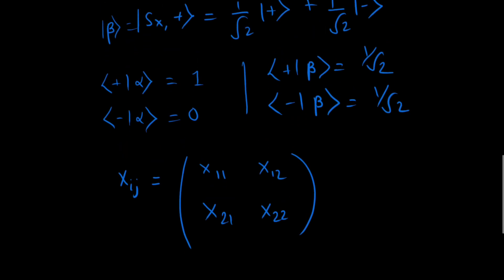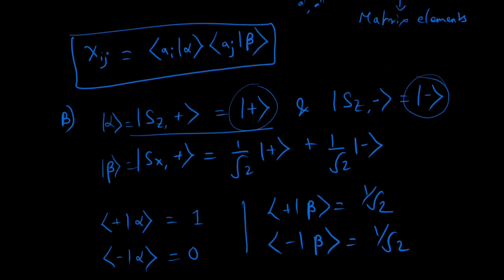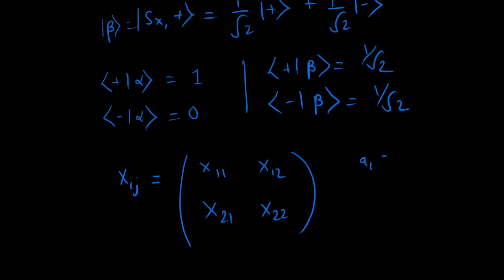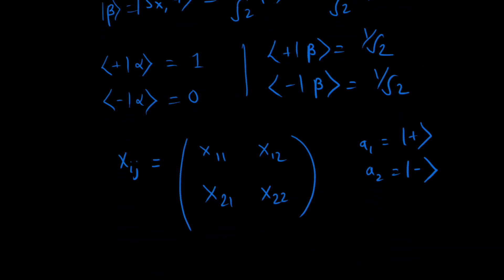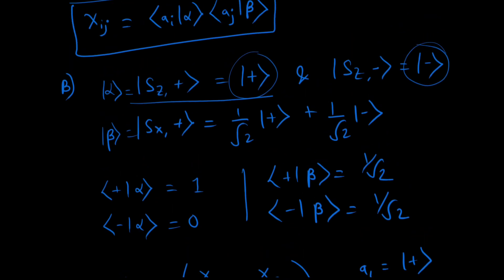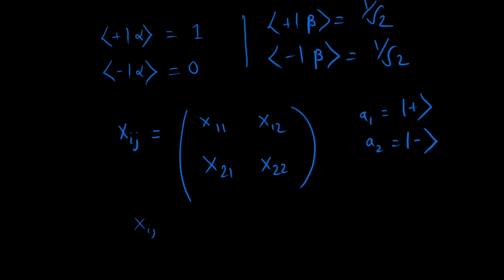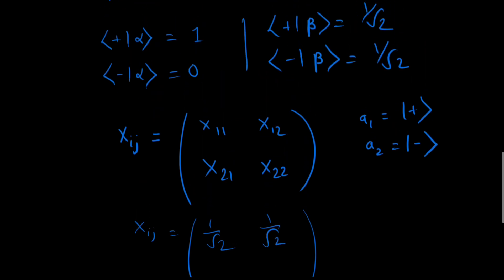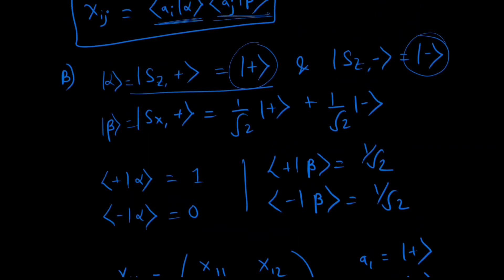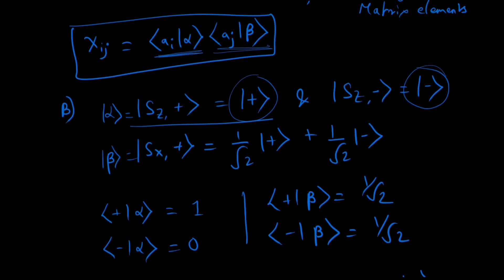Now, since if we put x11 here, let's consider that a1 is our plus and a2 as our minus state. So in the first term here, let's see what we'll get. This would become 1 and this term would become 1 for the first case. This would become 1 by root 2 for the first case. So we get xij as 1 by root 2, and here also we get 1 by root 2. Then again for the second term also we get 1 by root 2 because it's again 1 here and it's again 1 by root 2.